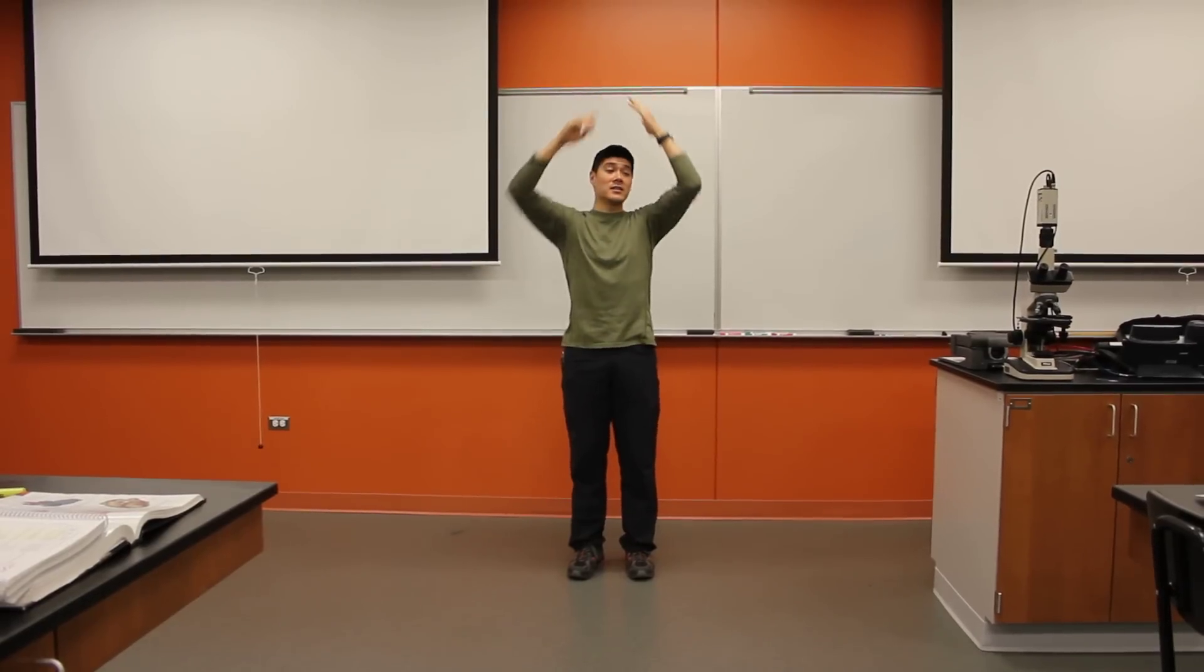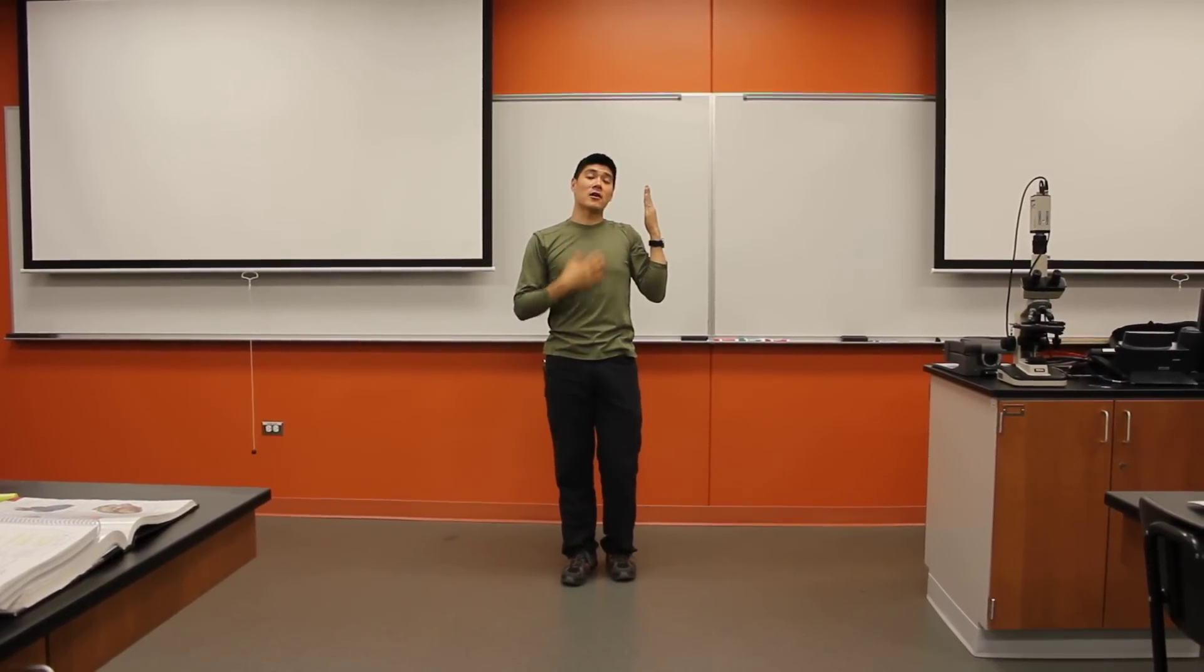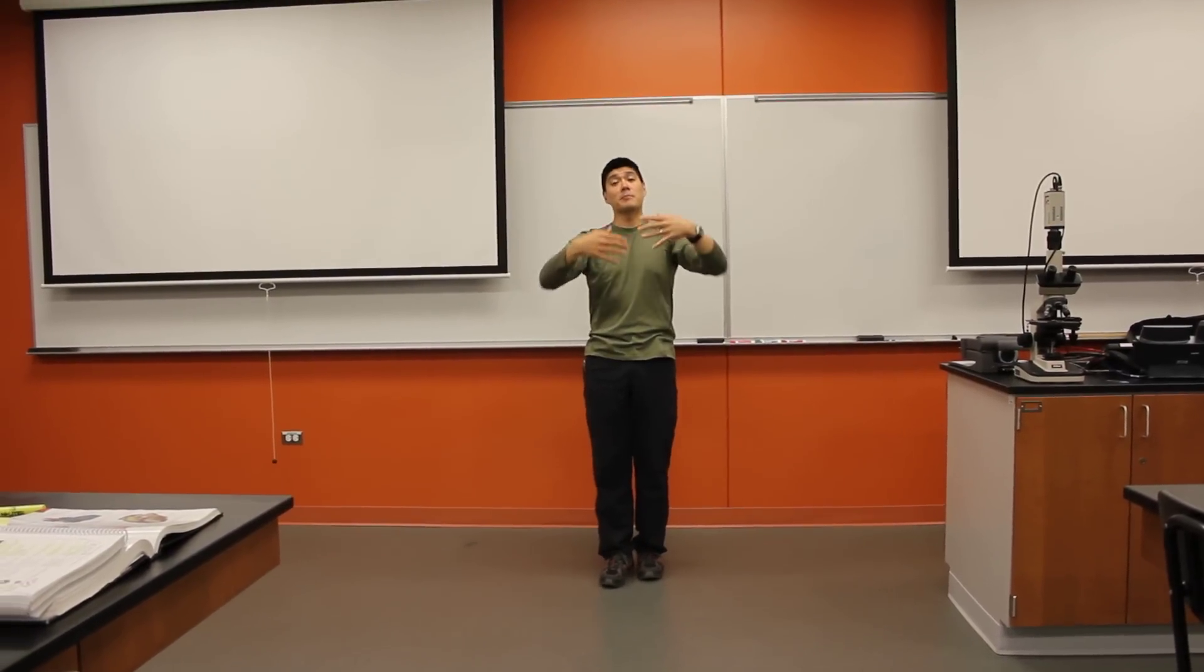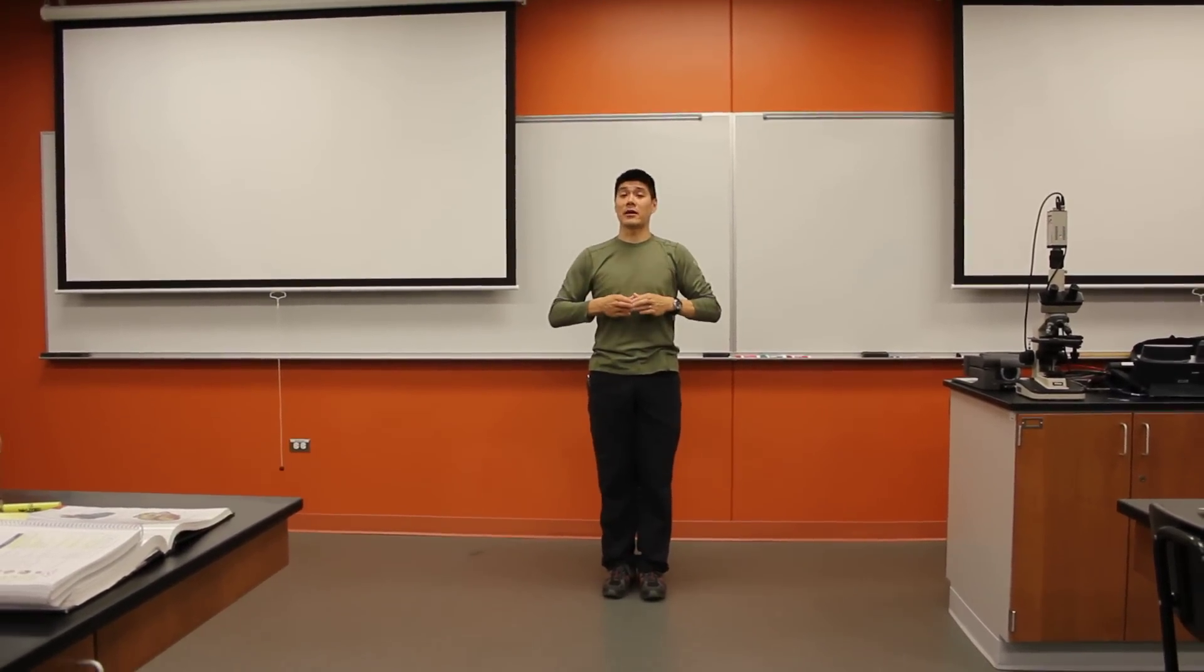Back to the arch of the aorta, gives the descending aorta. In the thorax, it's called the thoracic aorta. Gives off the posterior intercostal arteries, pierces the diaphragm, becomes the abdominal aorta.